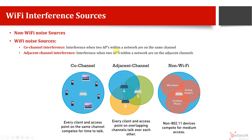If interference is due to the same channel, it is called co-channel interference — when two access points are on the same channel. For example, if I am running my access point on channel number three of 2.4 GHz and my neighbor is also running on the same channel, it will collide and create a problem.